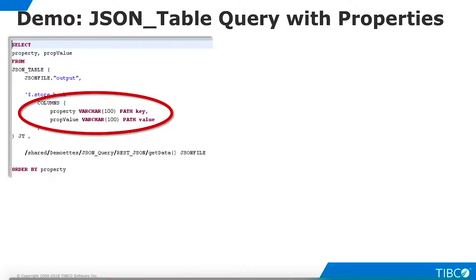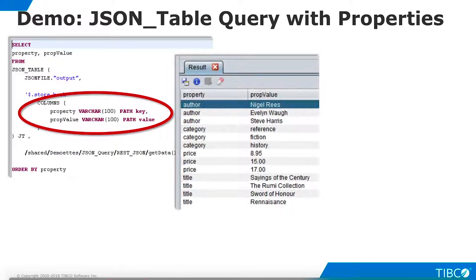In addition to retrieving data columns, we can also use JSON table to retrieve properties from a JSON structure. Here we ask for the JSON key aliased as property and value aliased as prop value. When we execute the view, both column names and values are returned.